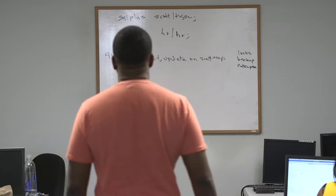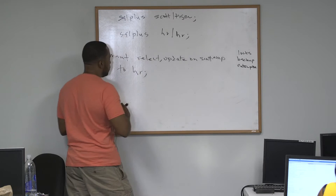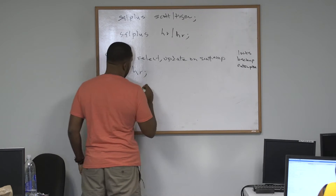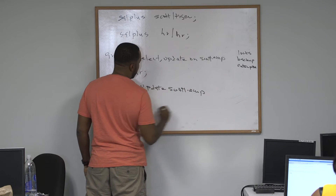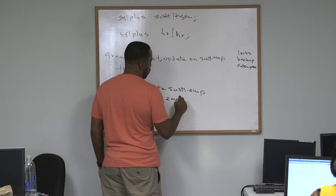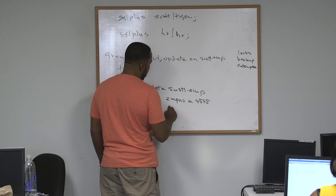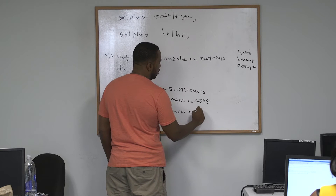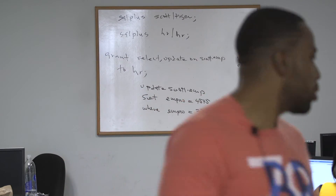Now watch this. On your Scott.EMP table — the middle tab where you're connected as Scott — do this: UPDATE scott.emp SET empno = 4545 WHERE empno = 7777; semicolon. With this semicolon, do NOT commit. Ensure that you don't commit.